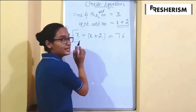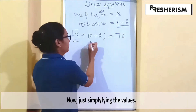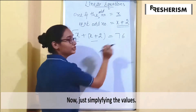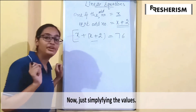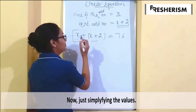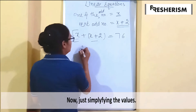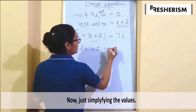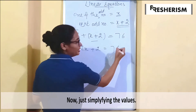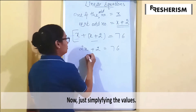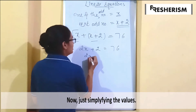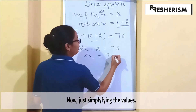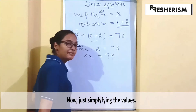We form the linear equation using the information given. x is the first number, x plus 2 is the next number, and their sum is equals to 76. So x plus x plus 2 gives us 2x plus 2 equals 76.